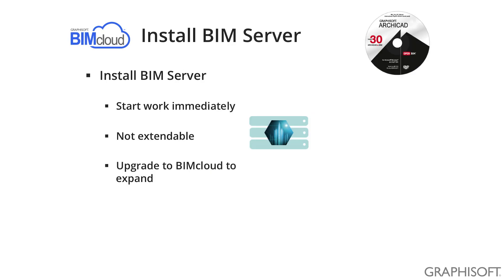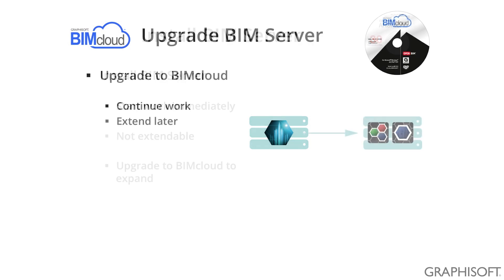The BIM Server installation is even simpler because you do not have to answer any questions. Just pop in the ARCHICAD DVD, select BIM Server installation, and the setup will begin automatically. If you decide later to upgrade your BIM Server to BIMcloud, it is also a very simple process — just insert the BIMcloud DVD into your BIM Server computer and you will be asked if you want to upgrade or not.